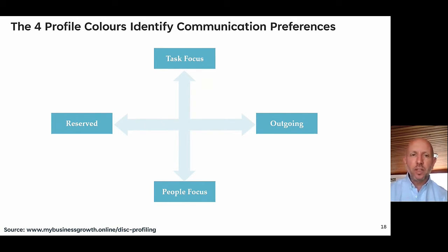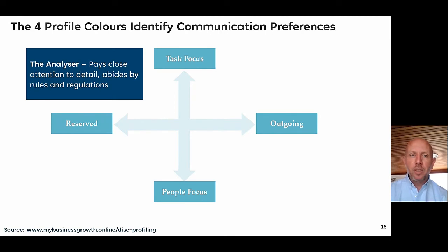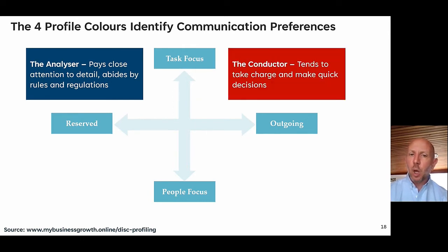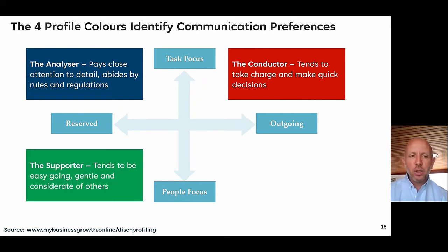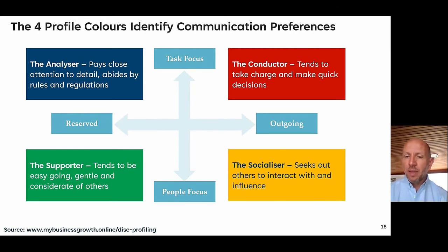We all sit in one of four quadrants. Top left — task-focused and reserved — you're an analyser, all about the detail, close attention to rules and regulations. Top right — task-focused and outgoing — you're the conductor: likely to take charge and make quick decisions. Bottom left — reserved and people-focused — you tend to be easygoing, gentle, and considerate of others. And bottom right — people-focused and outgoing — you're the socialiser: you seek out others, like to influence people, and live in quite a creative space.